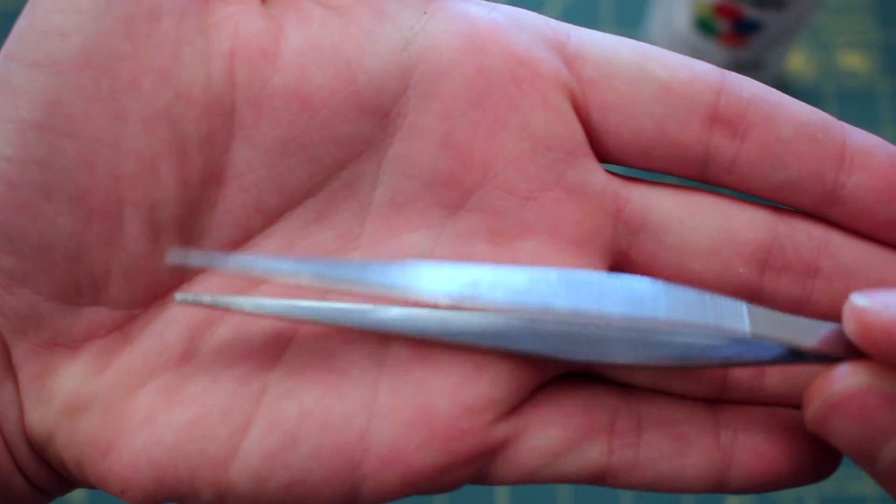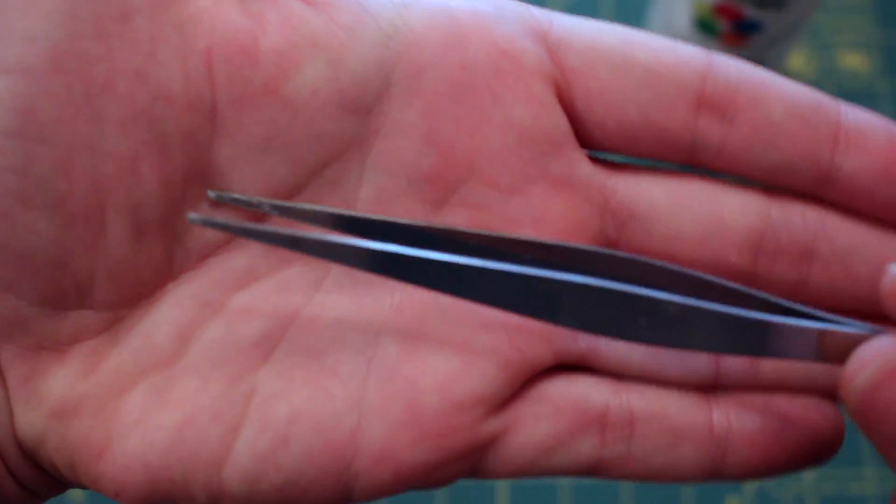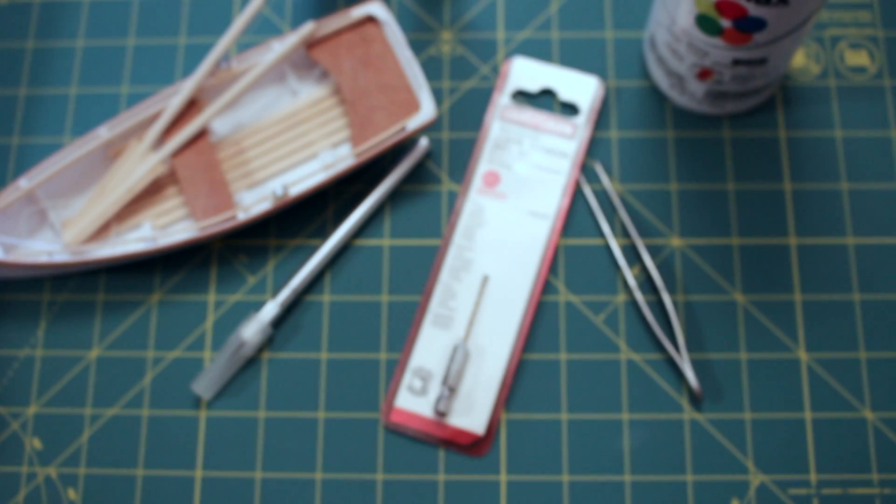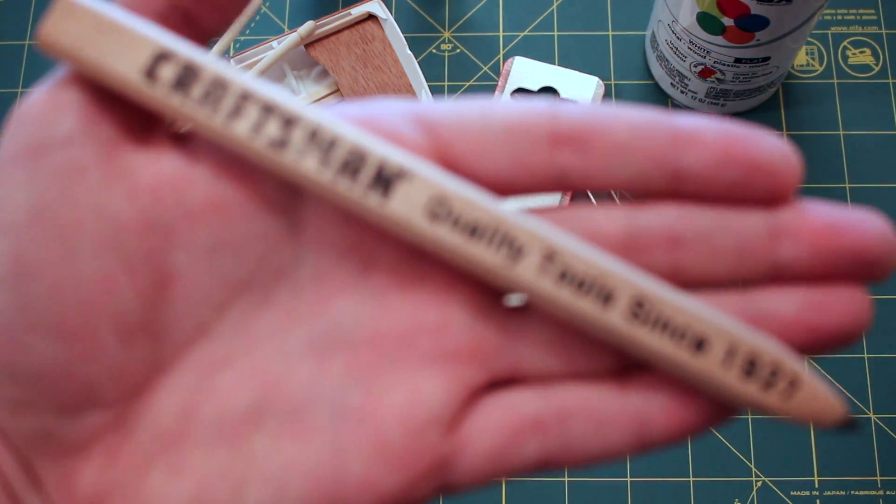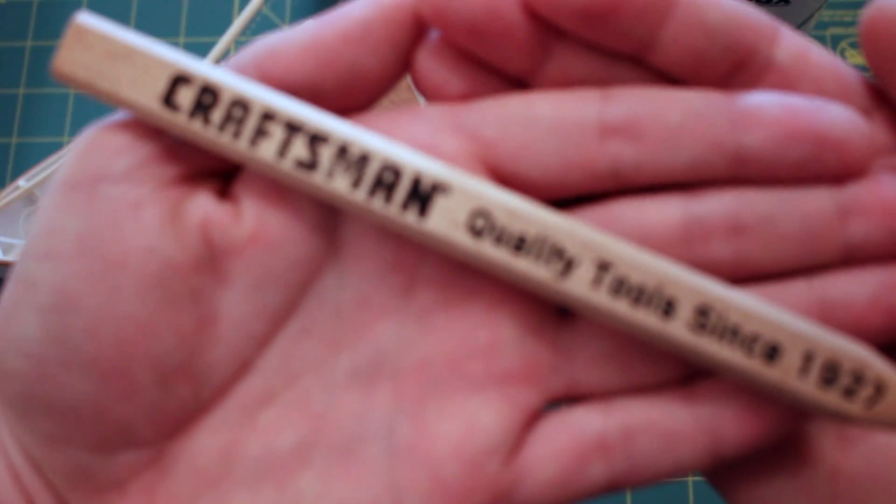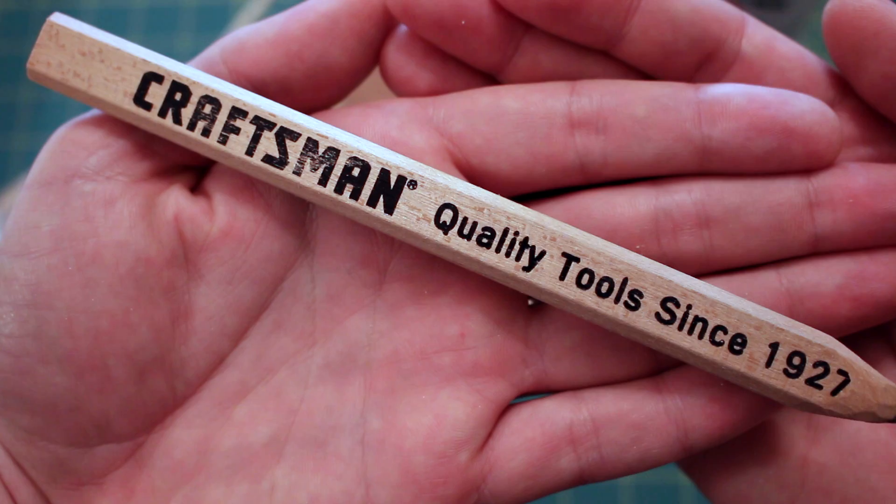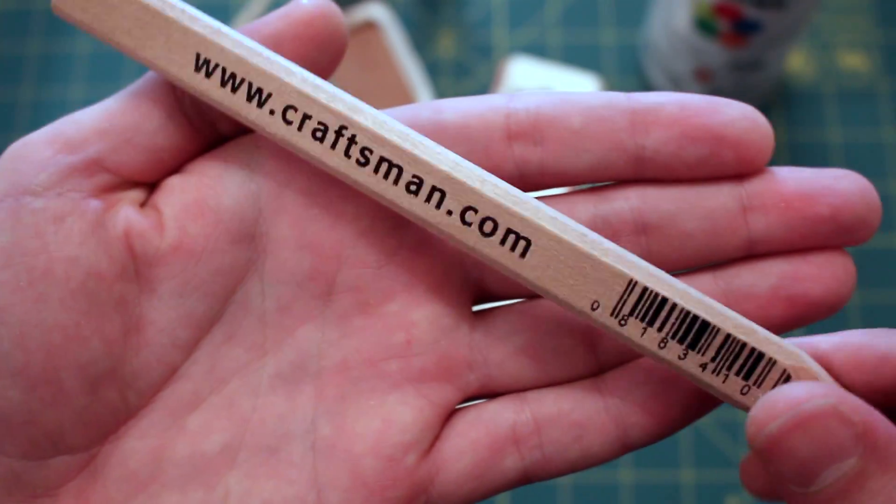Tweezers also helped a bunch. Again, standard. They're a little dirty from all the super glue, but just something nice to have. And a pencil, which I used a ton. So, that's also just one of those things that's nice to have. No, it does not have to be a craftsman or anything of the sort. I just like this because it doesn't roll off the table.